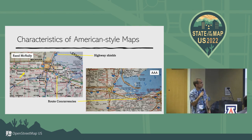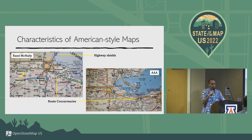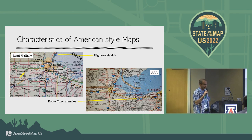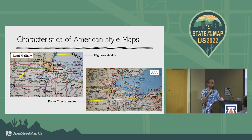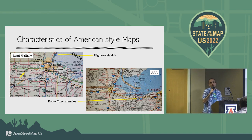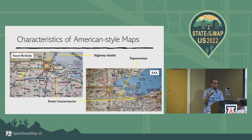Route concurrencies are a big thing in the US that are not quite as common overseas. In this case, you've got the Ohio Turnpike running through the map — that's the confluence of Interstate 80 and 90. On the AAA side you'll see them side by side, while Rand chose to stack them in a vertical configuration — that's hand-drawn cartography to make the pieces fit in the right amount of space.